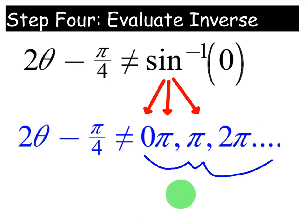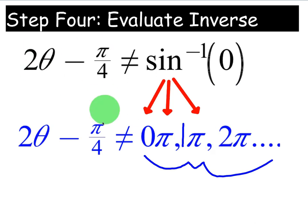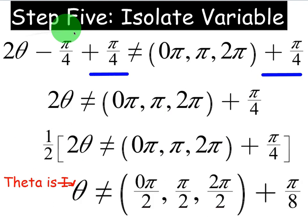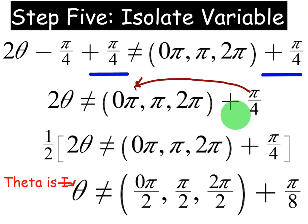Looking at the coefficients — 0, 1, 2 — the pattern is just integers. However, we have 2θ - π/4 on the left, so we need to evaluate this inverse for step four, then isolate θ by adding π/4 and dividing by 2 in step five. That leads us to step five: isolate the variable. We're going to add π/4 to both sides.